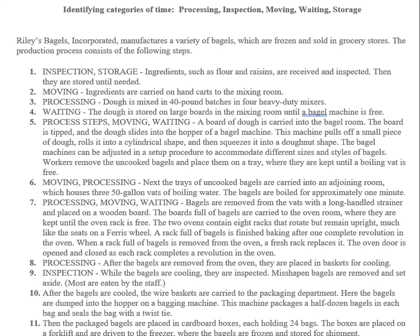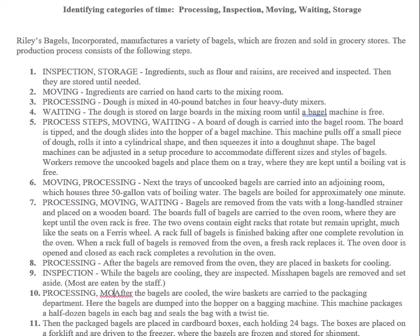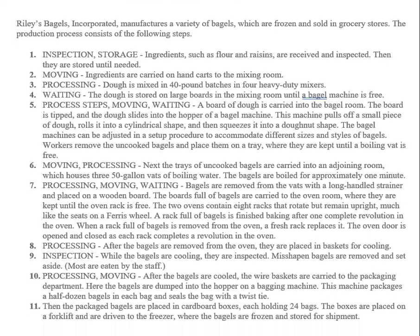Step ten: after the bagels are cooled, the wire baskets are carried to the packaging department where bagels are dumped into the hopper of a bagging machine. The machine packages a half dozen bagels in each bag and seals the bag with a twist tie. Step ten involves processing and moving.